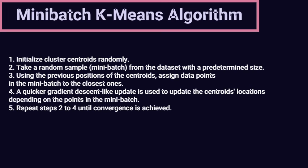Initialize cluster centroids randomly. Take a random sample, mini-batch, from the dataset with a predetermined size. Using the previous positions of the centroids, assign data points in the mini-batch to the closest ones. A quicker gradient descent-like update is used to update the centroids locations depending on the points in the mini-batch. Repeat steps 2 to 4 until convergence is achieved.